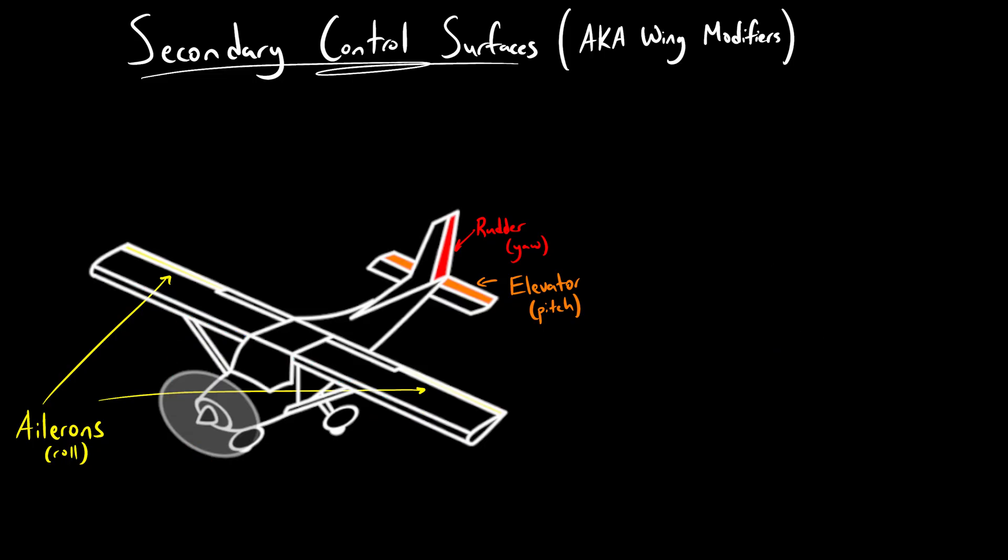As the name suggests, spoilers spoil the airflow over the wings. They are located on the top of the wings in order to direct the airflow upwards and detach it from the wing, creating a controlled stall. This reduces lift in a controlled way while also increasing drag.